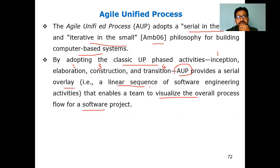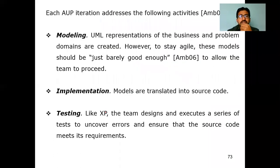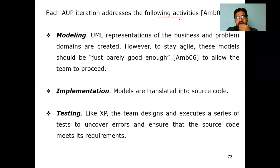The proper definition of Agile Unified Process: it provides a serial overlay that adopts software engineering activities to enable a team to visualize the overall process flow of a software project. Coming to the framework activities, in AUP we have different activities such as modeling, planning, construction, and deployment. The first activity is modeling.